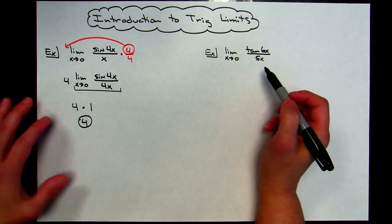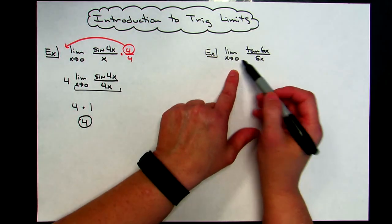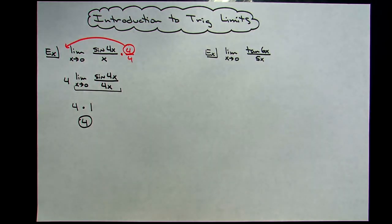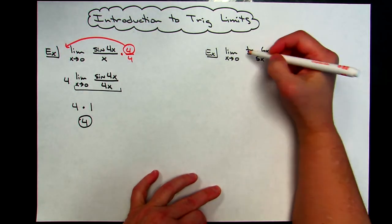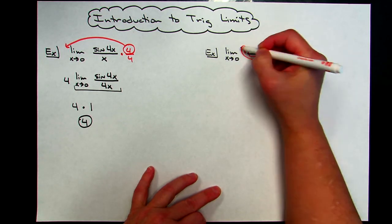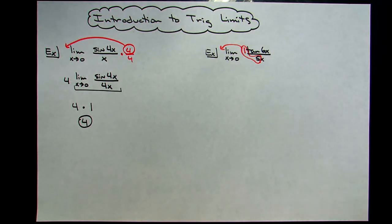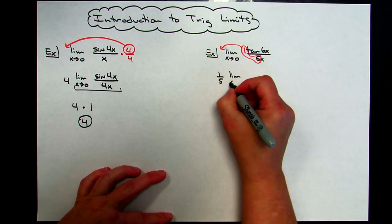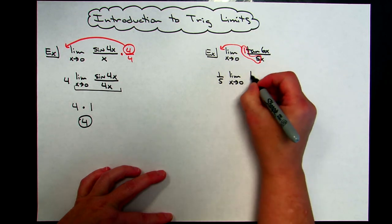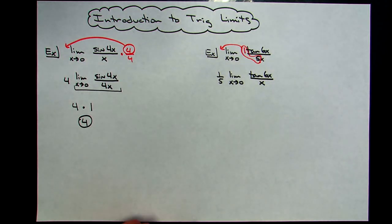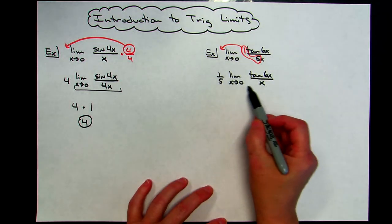Another very similar example: the limit as x approaches 0 of tangent 6x over 5x. Looking at the coefficients, there's a 5 coefficient on x in the bottom and an imaginary 1 coefficient on the tangent side. Since these are coefficients sitting out in front, I can pull out the 1/5 and then look at the limit as x approaches 0 of tangent 6x over x. That is one of those special trig limits — if I have them memorized, I know this is going to be 6.